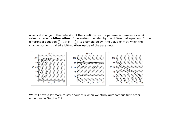If there's a radical change in behavior of solutions—for example, above y equals 20 solutions approach one value while below they approach another—this is called bifurcation of the value of a parameter. We'll spend more time covering bifurcation in section 2.7.